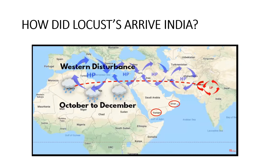In India, we call this weather phenomenon western disturbances, which causes rainfall in northern Africa and travels towards the eastern direction.